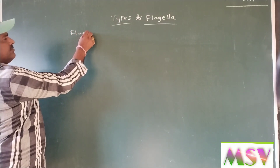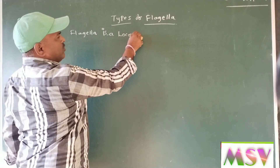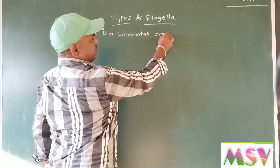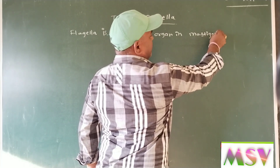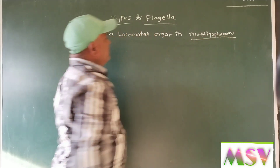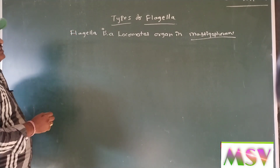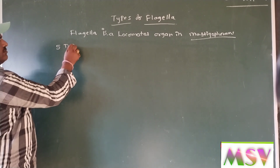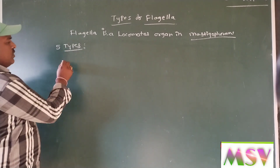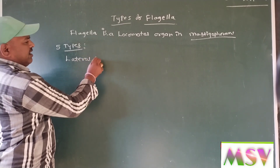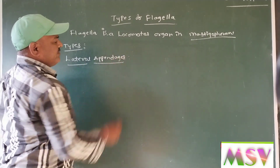Flagella is a locomotor organ in mastigophorens. These flagella are divided into five types based on the lateral appendages arrangements. Some flagella bear lateral appendages.